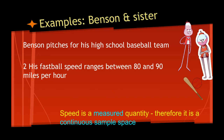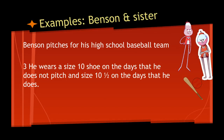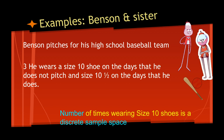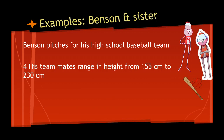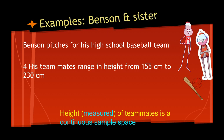Second example: a fastball that has a speed ranging between 80 and 90 miles an hour. Speed is a measured quantity, and that means it's a continuous sample space. We can also look at Benson's shoe size — he wears a size 10 shoe on the days he doesn't pitch and a size 10.5 on the days that he does. The number of times he wears a size 10 shoe is counted, which makes it a discrete sample space. Finally, his teammates range in height from 155 centimeters to 2 meters 30 — that is a measured sample, so it's a continuous sample space.